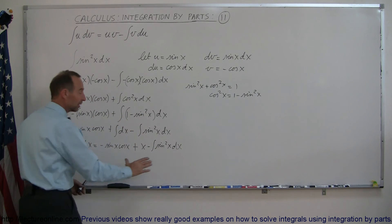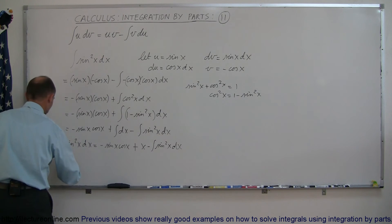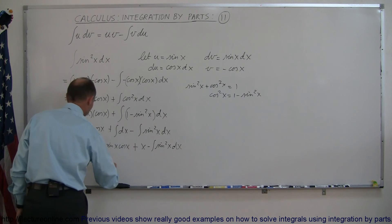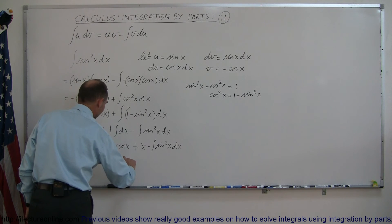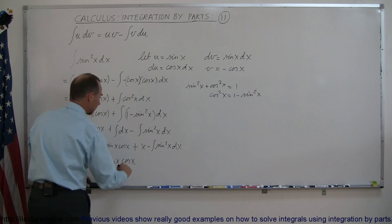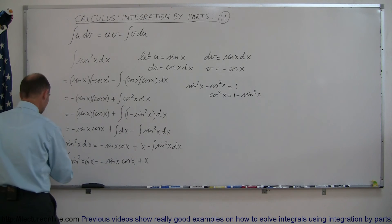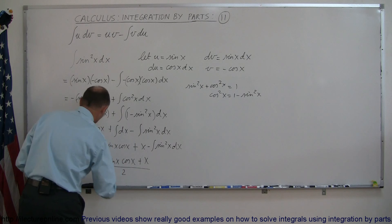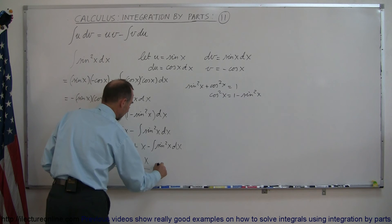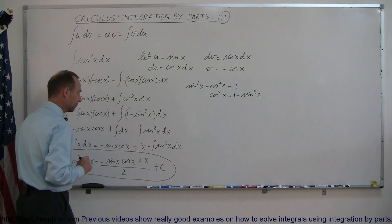Now if we move that last term over to the left side, we'll have two of those. So we get two times the integral of sine squared of x dx, which is equal to minus the sine of x times the cosine of x plus x. Then if we divide both sides of the equation by two, we have the integral of sine squared of x dx equal to that expression, plus a constant of integration. And that's how you do a problem like this. Very tricky.